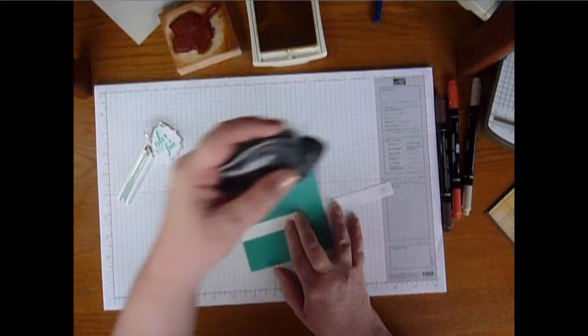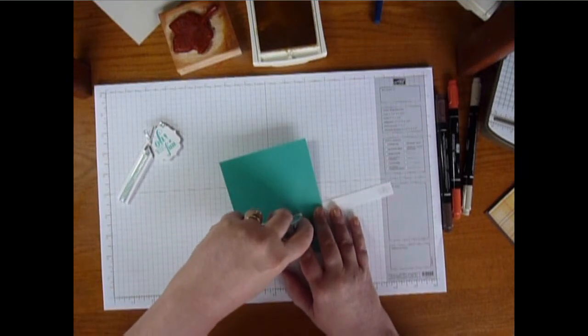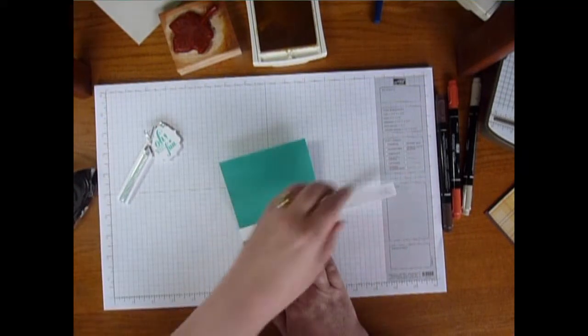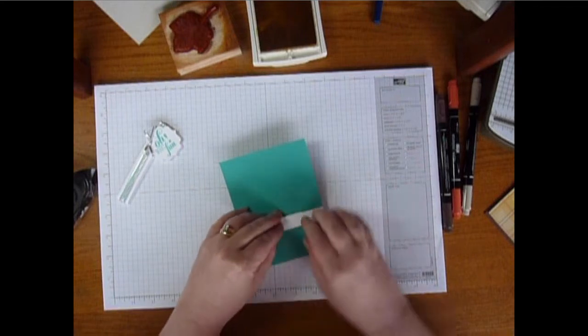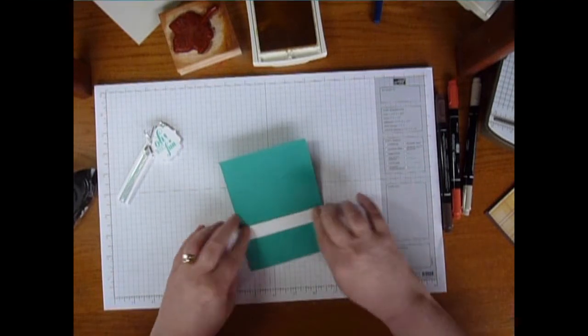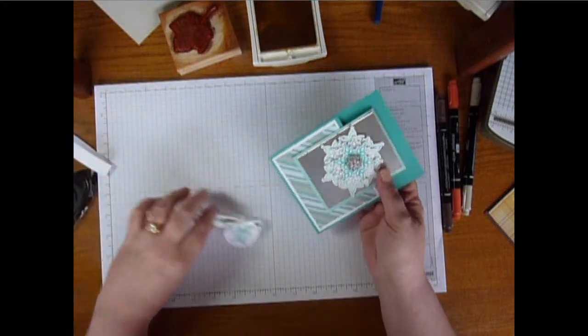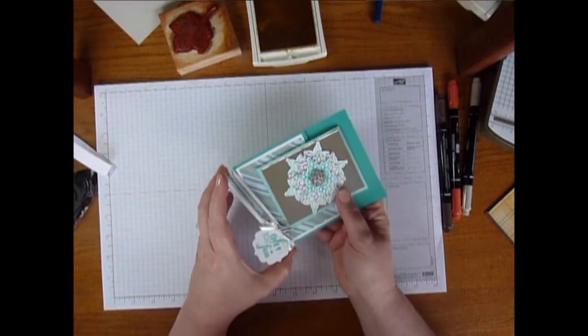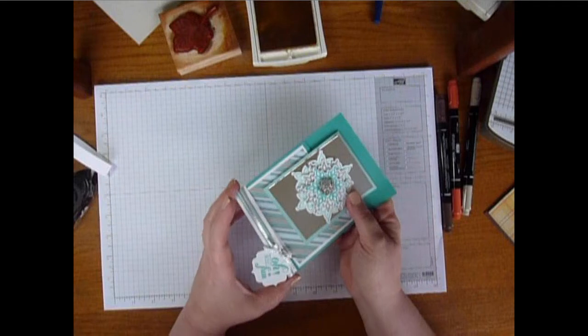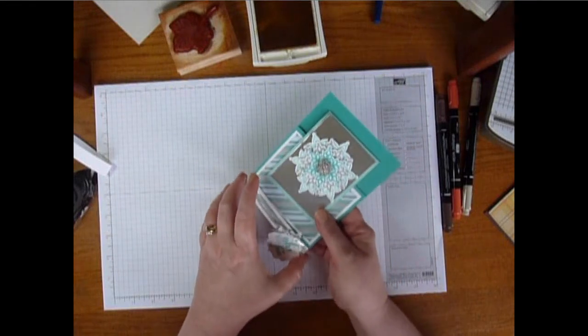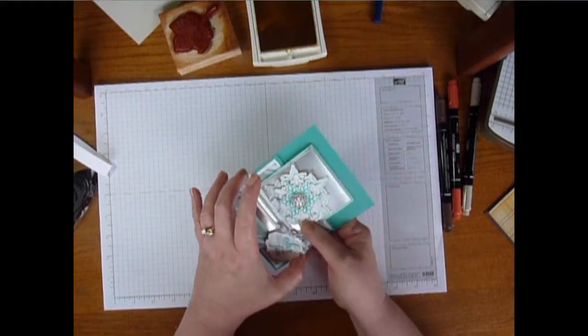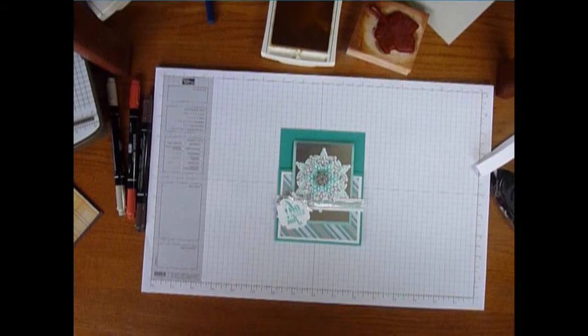Now just take a little adhesive at that end and on the middle end on the top, and then bring everything back together again. And that's it. That's your belly band. So it just goes on and off. And that's the second card I made using this fun fold. If you have any questions, please let me know. Thanks for watching.